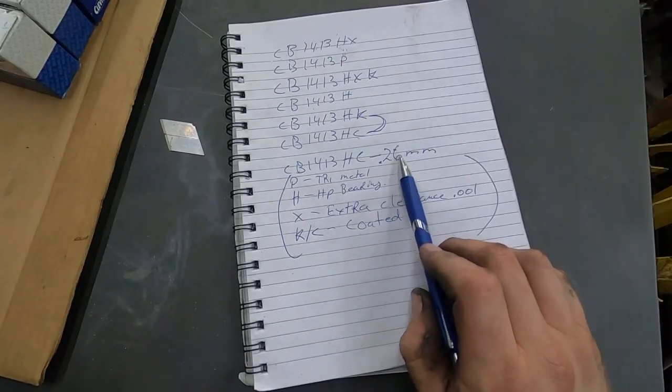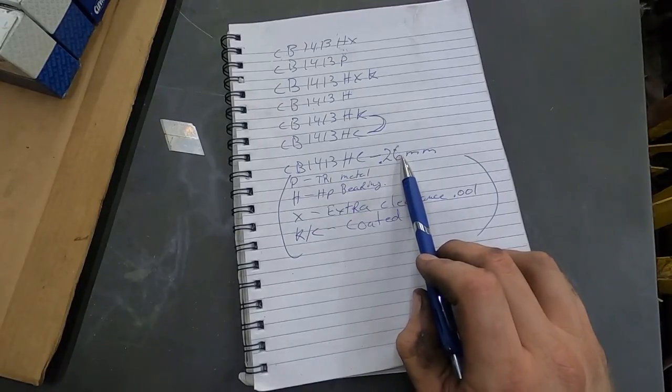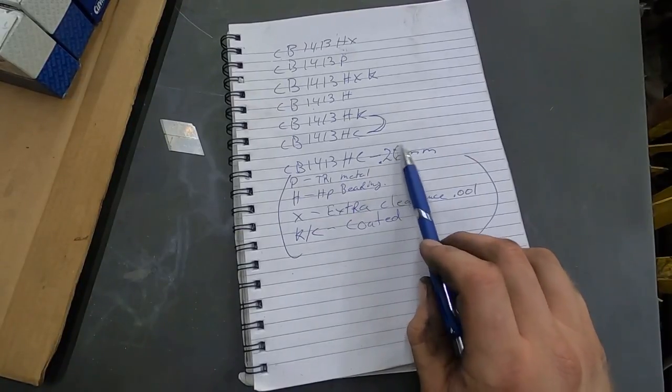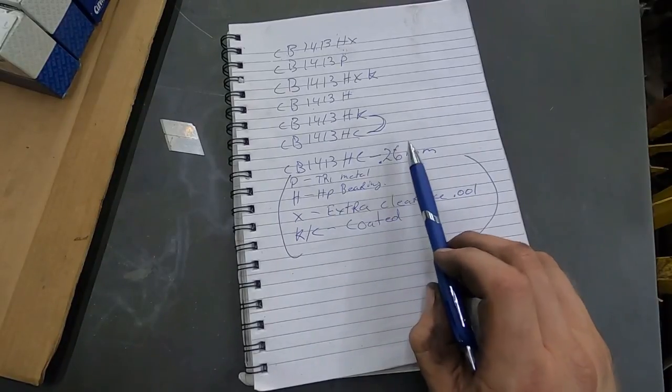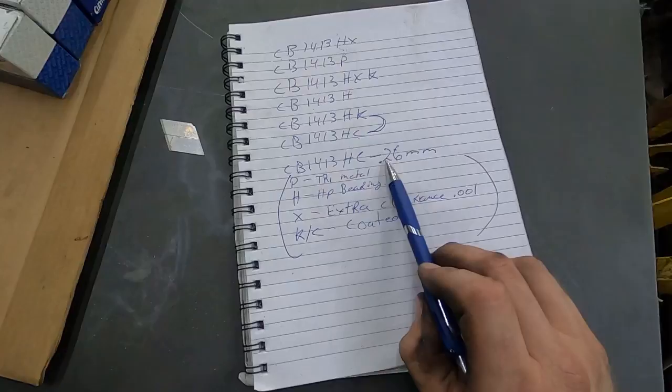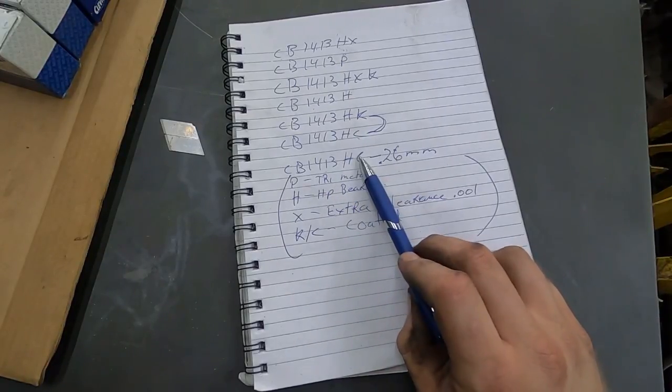And then what you can do is you can get an extra thou oil clearance, which I'm not sure why you just wouldn't grind the crankshaft for the extra thou oil clearance, but I guess depends how good your crankshaft grinder is. But anyways, so that would be 10 thou plus 1 thou of clearance. This would be high-performance coated bearing.